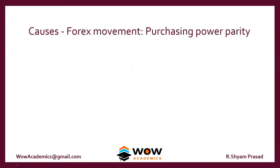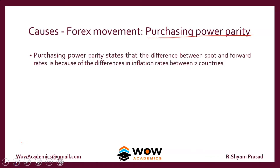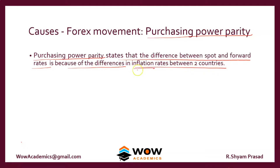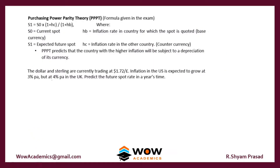The second reason for the movement of Forex is Purchasing Power Parity. Purchasing Power Parity states that the difference between the spot and forward rate is because of the differences in the inflation rate between two countries. Earlier, we found that the interest rate was the reason for Forex movement, but this second theory says it is the inflation rate which is the cause of Forex movement.